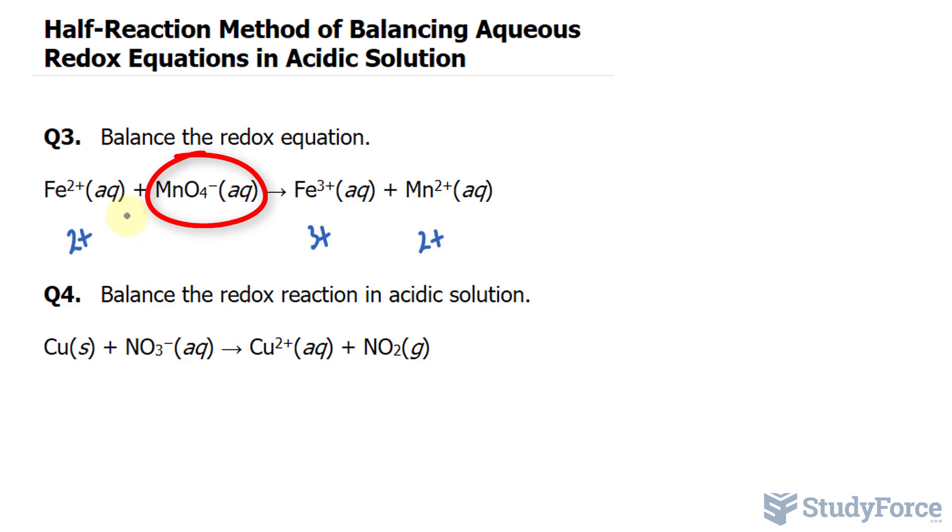The oxidation state of oxygen is 2- and we have 4 of them. The complete ion, this ion is called manganate, the complete ion here is negative 1 as you can see. So we can do some math, we can set X as the oxidation state of Mn plus the oxidation state of oxygen, it's 2- and there are 4 of them, that's equal to negative 1.